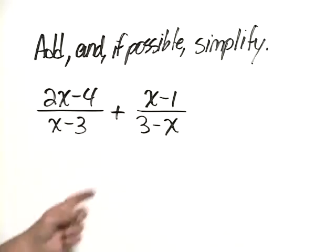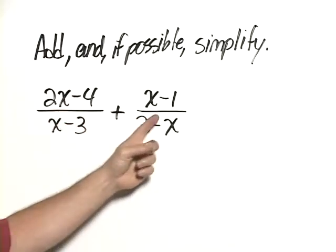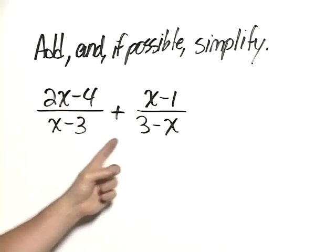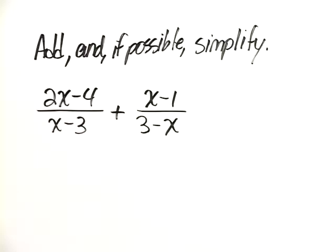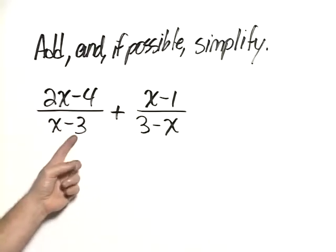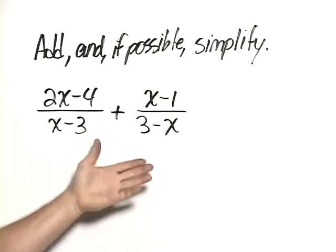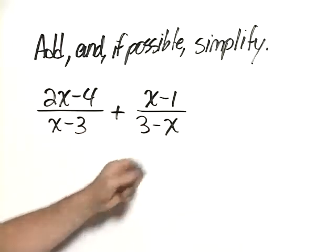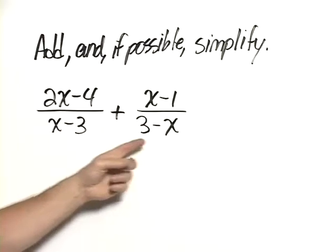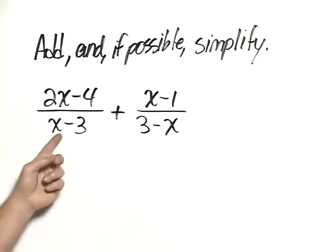In order to add rational expressions, the denominators must be the same, and what I want you to notice about these denominators is they are the opposite of each other. That is, x minus 3 is the opposite of 3 minus x, and we could say that 3 minus x is the opposite of x minus 3.